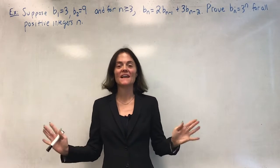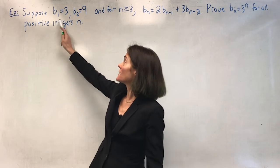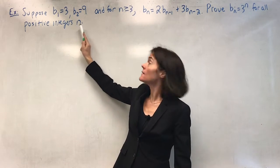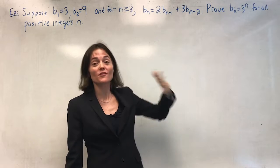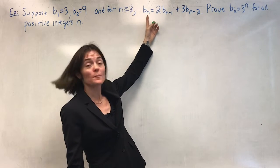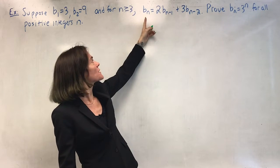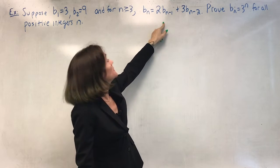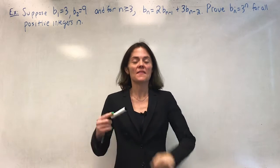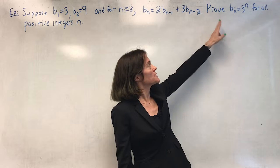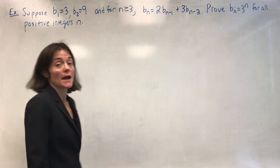We have a recursively defined function. We're given two initial conditions: b1 is 3, b2 is 9, and then for any integer bigger than or equal to 3, we can find bn by taking 2·b(n-1) plus 3·b(n-2). So for instance, at n=3, we would take 2 times 9 plus 3 times 3 to get that value and build our way up. What we're trying to do is prove that bn equals 3 to the n, and we will do this by induction.